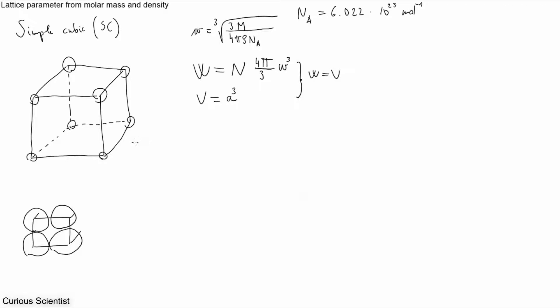So basically we just have the corners and we have eight of them. But each corner is just one eighth contribution to the unit cell. So in total a simple cubic structure has just one atom per unit cell.